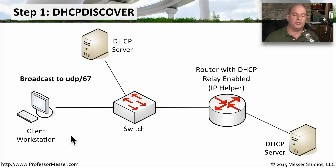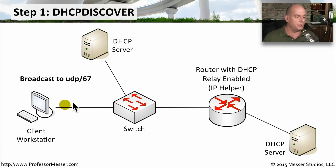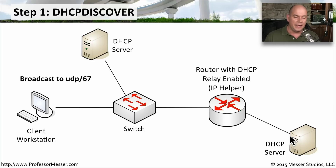Our client workstation has just been connected to the network with no IP address configuration. The first thing it does is try to discover a DHCP server by sending a broadcast to UDP port 67. Because it's a broadcast, it goes to all devices on the subnet, and if a router has DHCP relay configured, it will send the broadcast along to the other subnet as well.